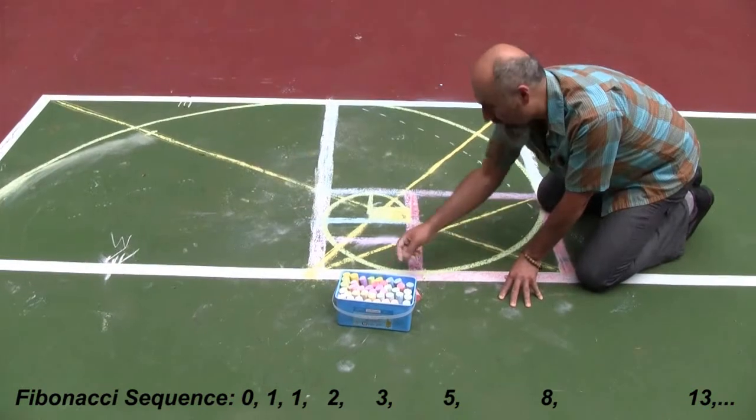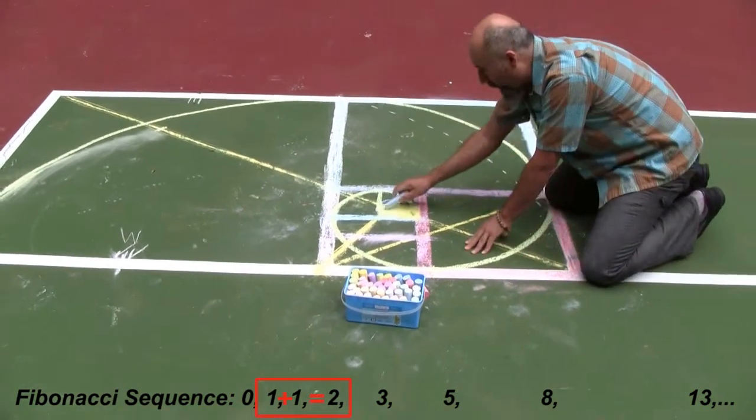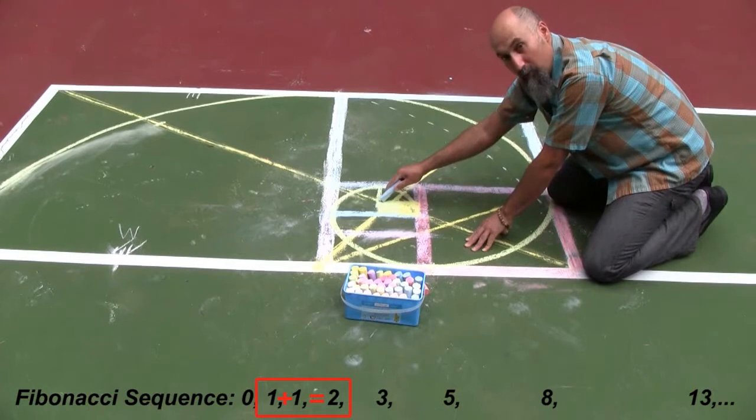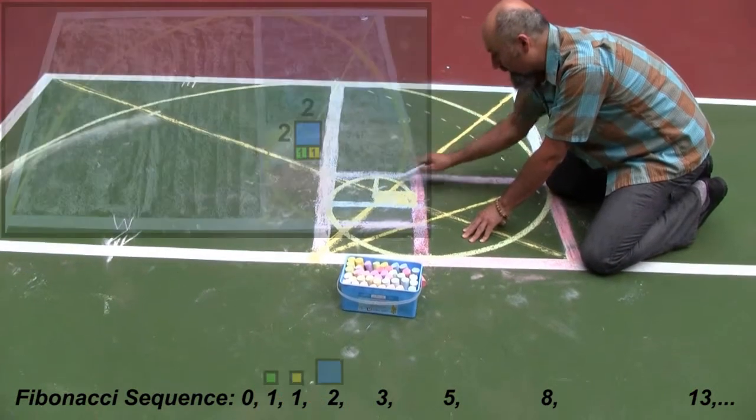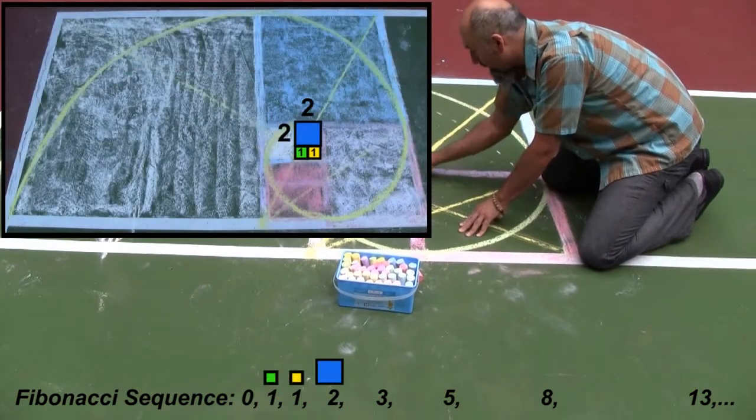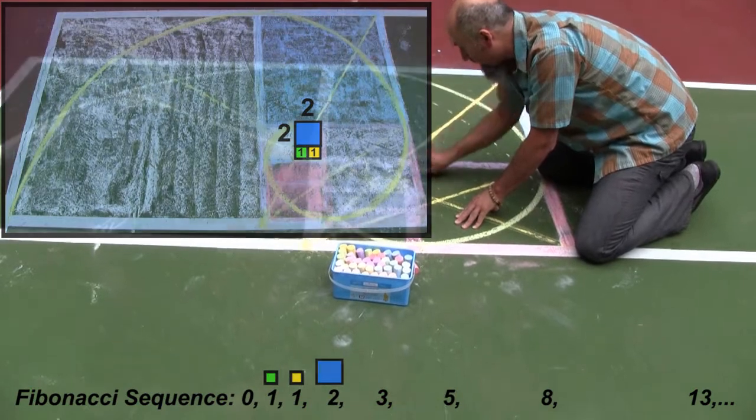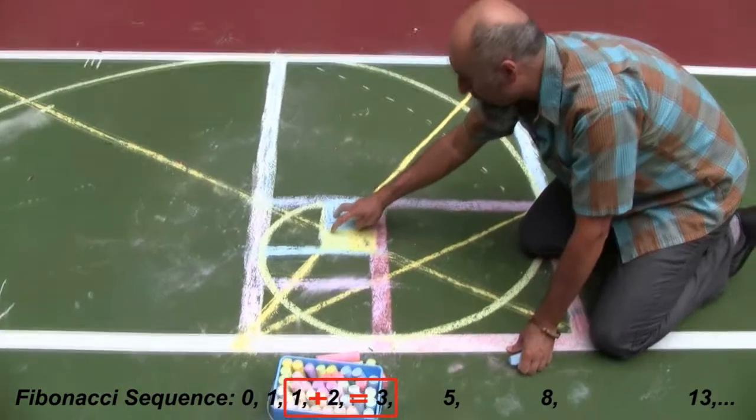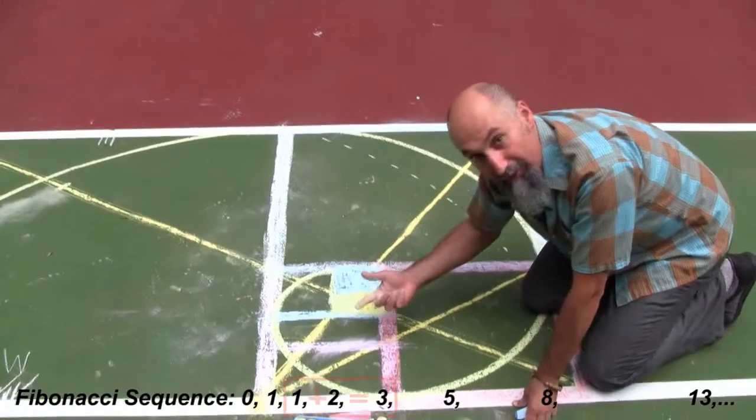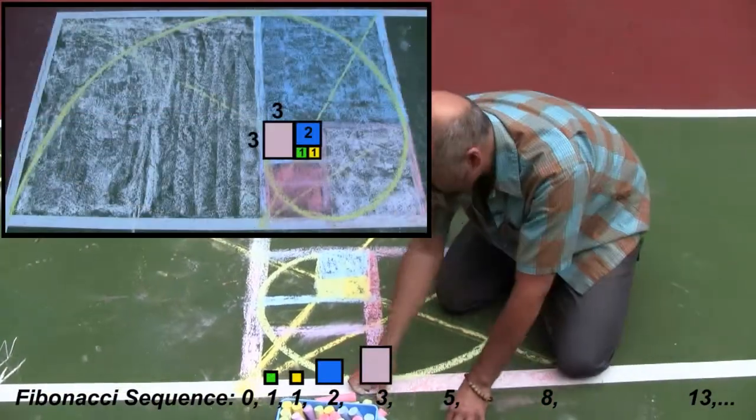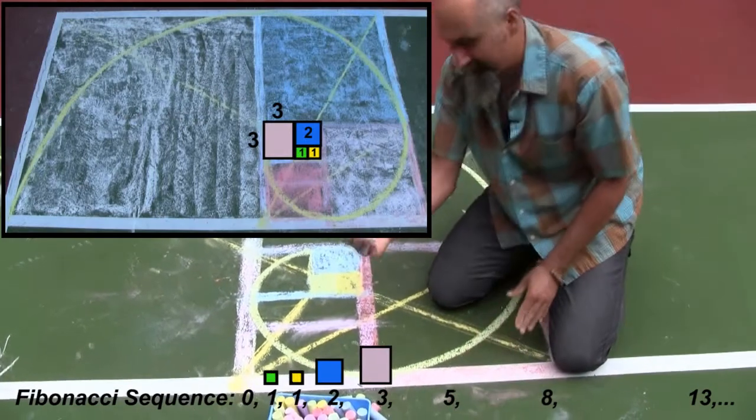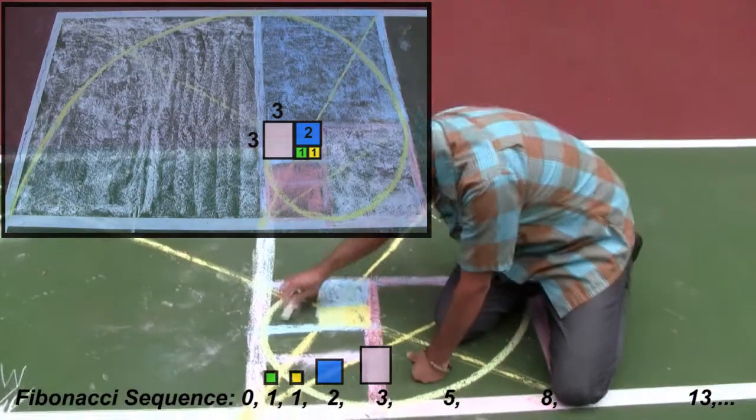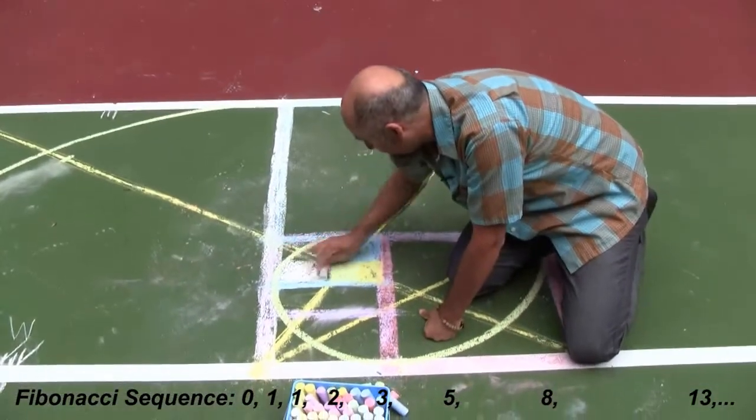And then we're going to use blue, so one by one. What we're going to do is make another square here, which is two by two. So this guy ends up being a two by two square. So one plus two is three, and this becomes a three by three square. Let's use pink. So we're going to make a three by three square.